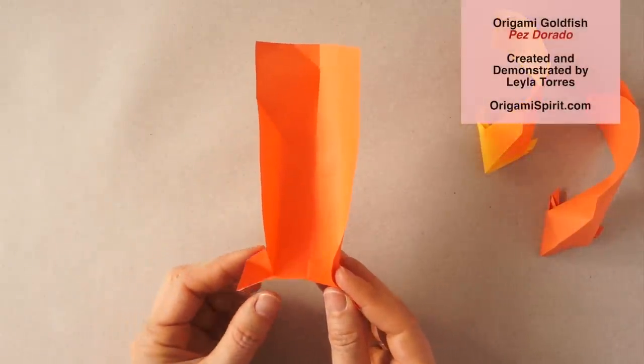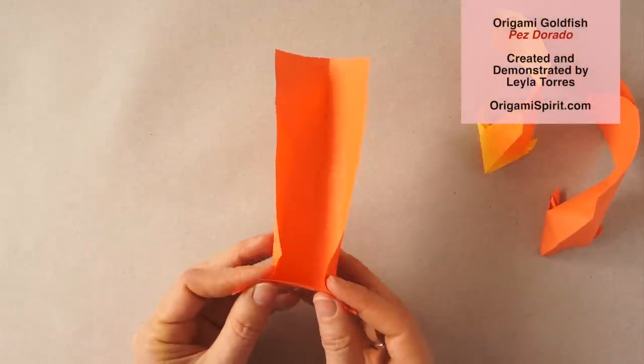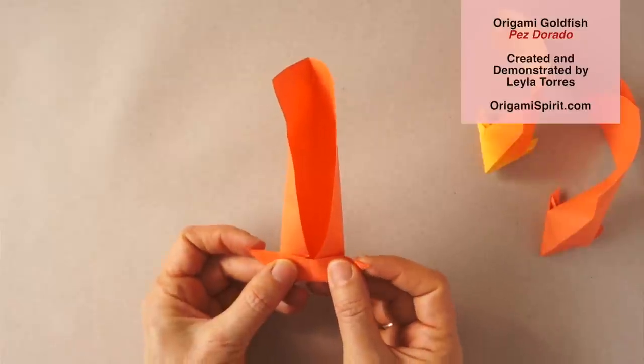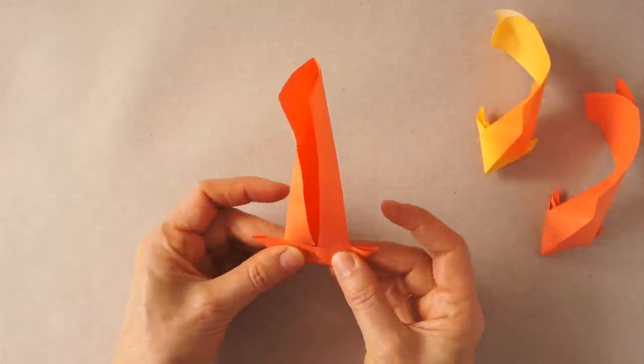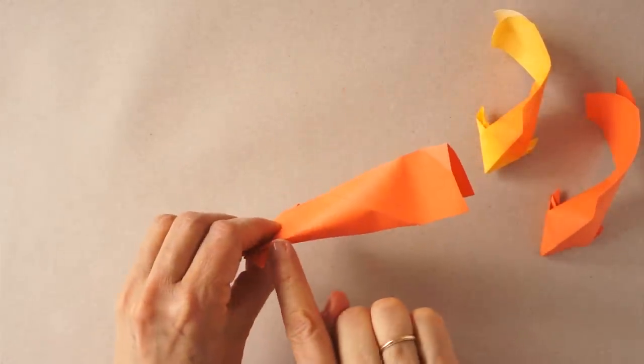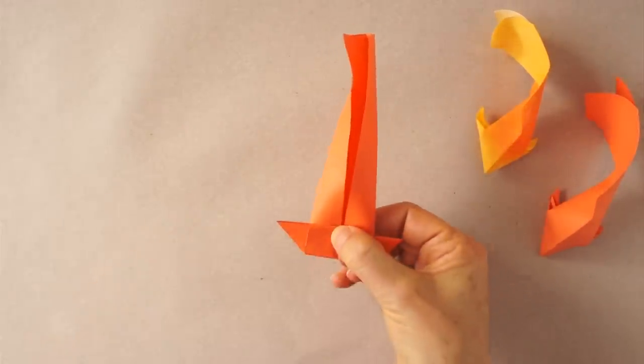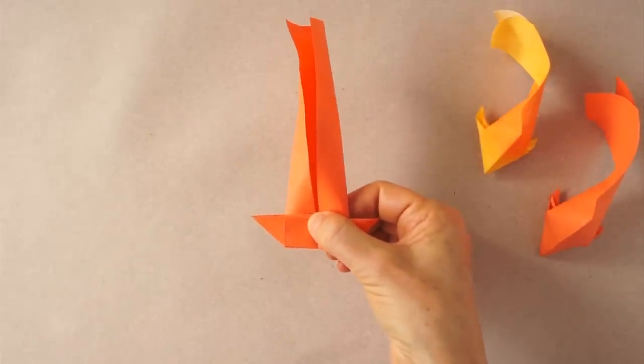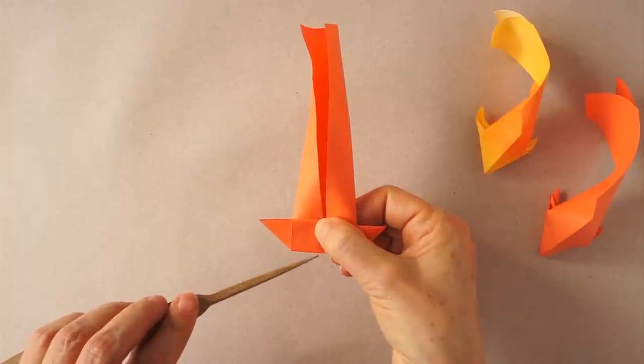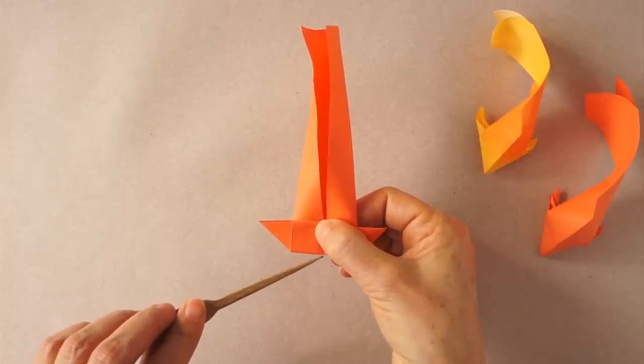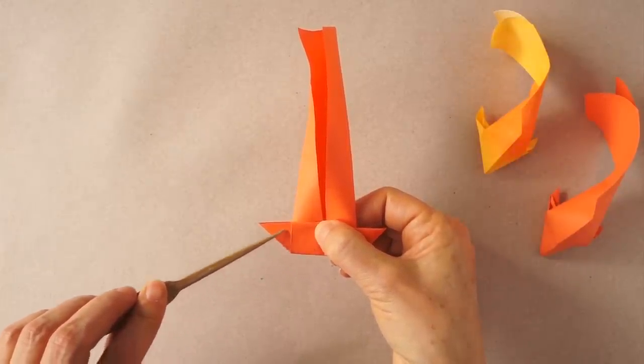We hold both points and collapse. Notice that I don't have any mark here. Now we hold like this and we are going to make a line coming not quite from the center but off-center to about here.